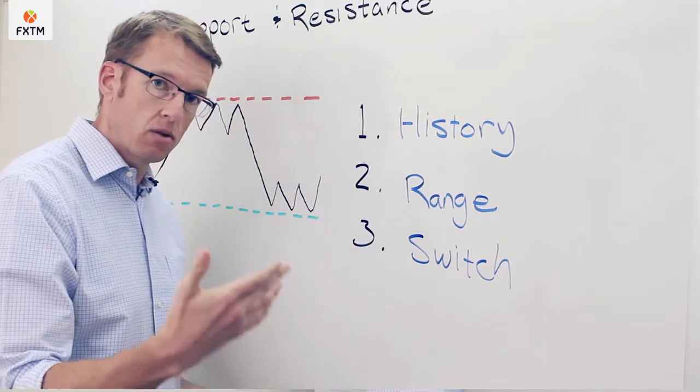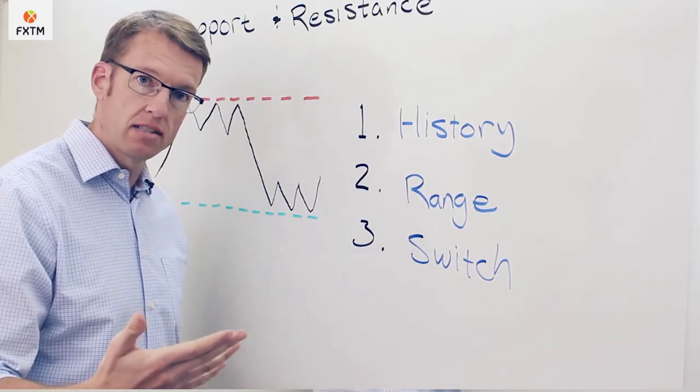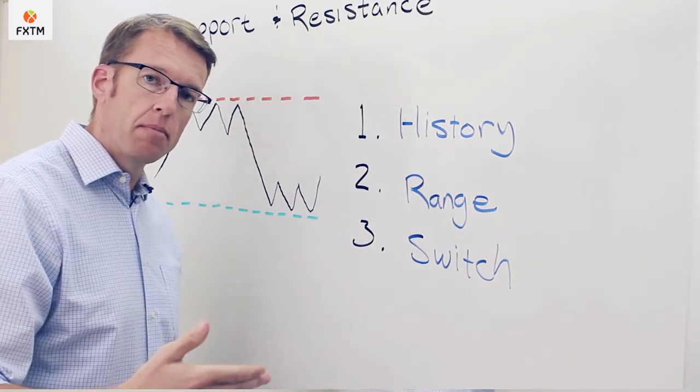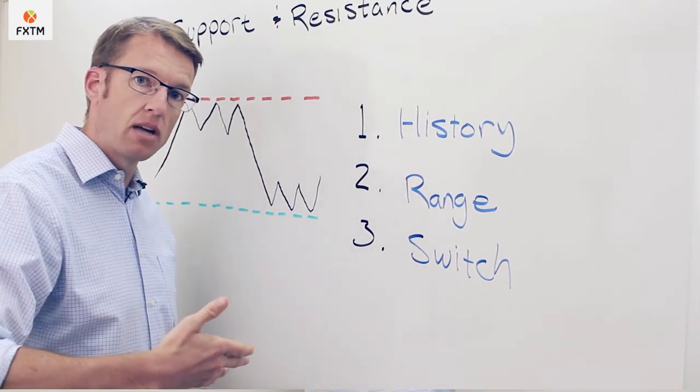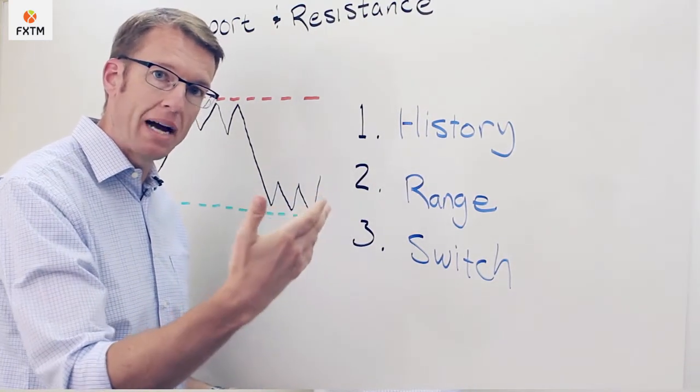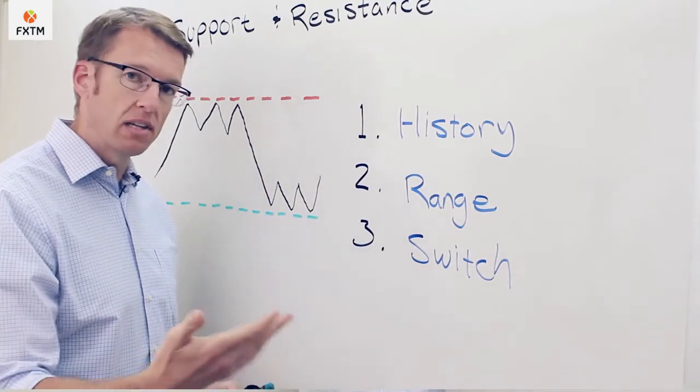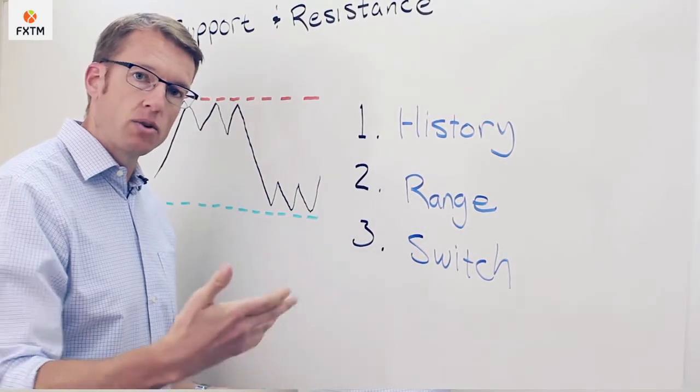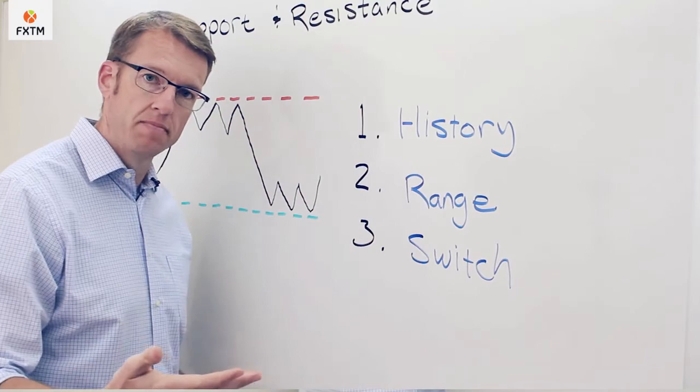It is quite likely that it will act as a subsequent level of resistance. By the same token, if a price has gone finally beyond a resistance level and then returns back to it from up above, it's very likely that that same level is going to act as a support pivot.